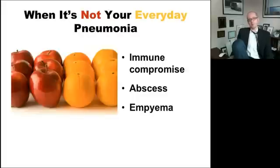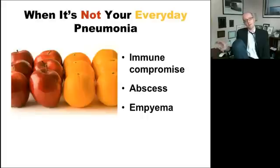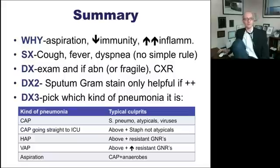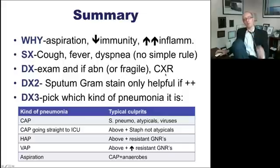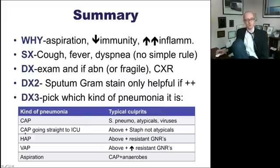Another thing to recognize is what makes it not your everyday pneumonia — it's an orange, not an apple. Immune compromise is one trigger. Big abscesses or a big empyema also changes the management and causes, so think of those as a different entity to learn separately. In summary: you get pneumonia because of aspiration, reduced immunity, or increased inflammation. Look for cough, fever, and dyspnea, but nothing simple nails it. If you suspect it, examine the lungs; if the exam is abnormal or the patient is fragile, get a chest X-ray — that is the only appropriate way to make the diagnosis. Use the sputum gram stain only if clearly positive for a pathogen; otherwise use clinical judgment to pick the type of pneumonia while you wait for cultures.